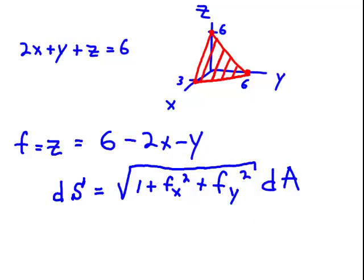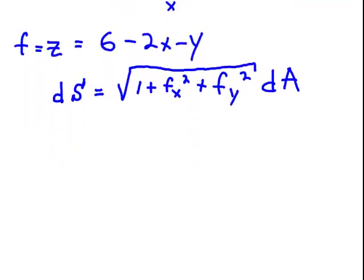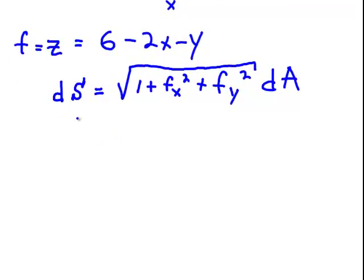So basically this formula tells me I need to find the derivative of z or f with respect to x. That turns out to be negative 2.